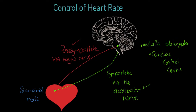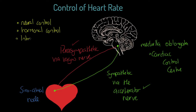Now the question is, how does the medulla oblongata know that these are the conditions in which to act? I'd like to introduce you to three mechanisms. We're going to look at neural control. We're going to look at hormonal control — and actually the hormone has nothing to do with the brain. And we are going to have a look at intrinsic control. The top one, neural control, is the one that involves the medulla and the brain itself.